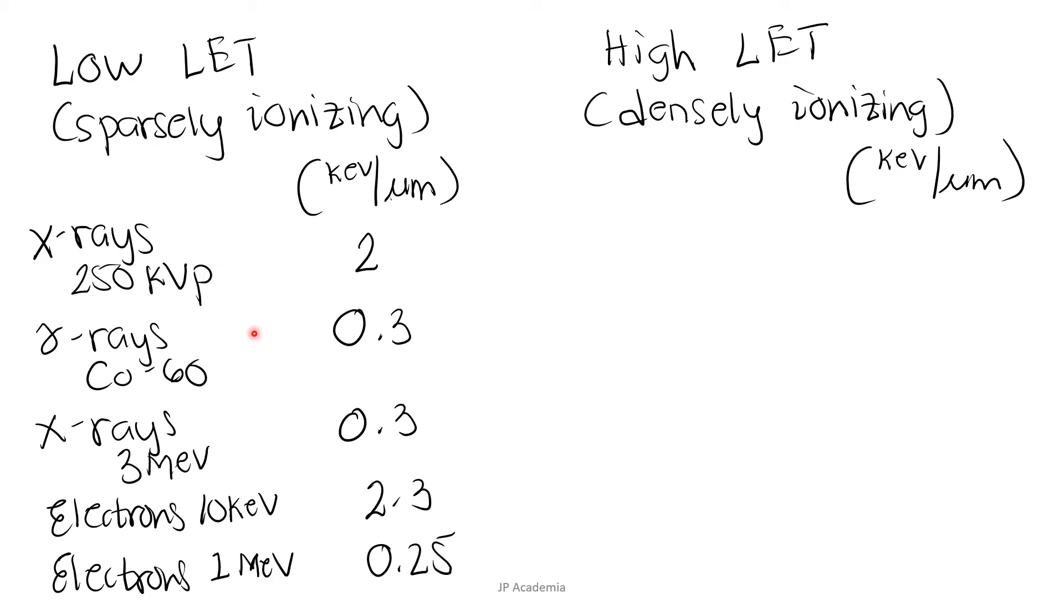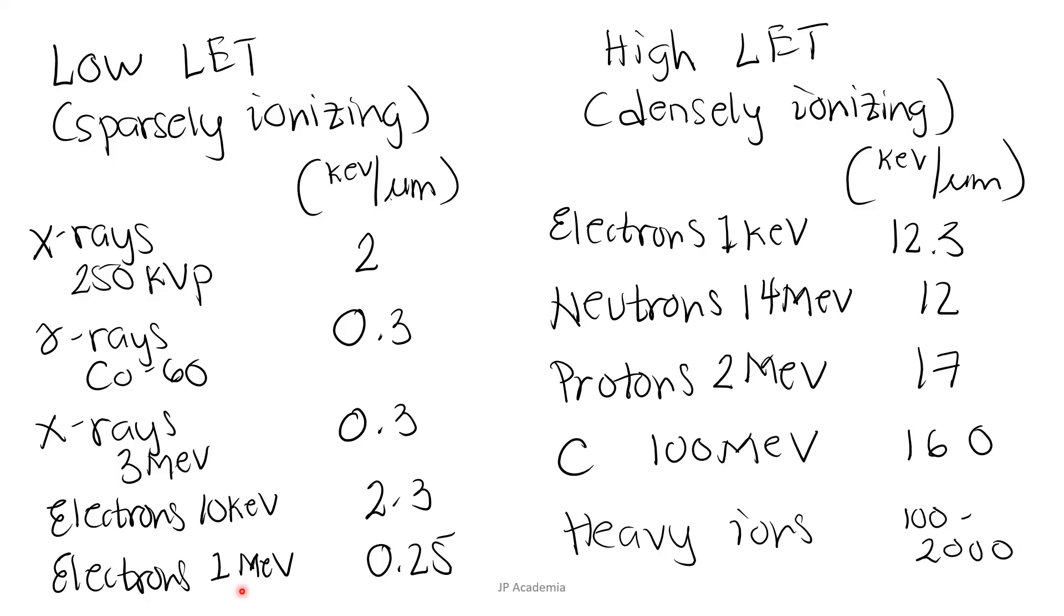So we have x-rays of 250 kVp, gamma rays due to cobalt-60, it is released by this radioisotope, x-rays 3 mega electron volts, then these two electrons with these energies. Next, for the high LET we have the following: electron of lower energy 1 kilo electron volt which has this LET, neutrons, protons, carbon ion, and heavy ions. Relatively it has a high LET compared to this one.